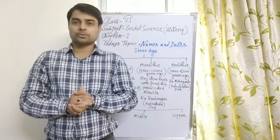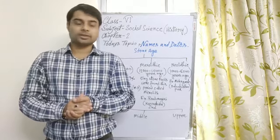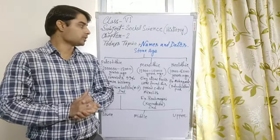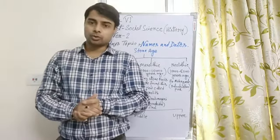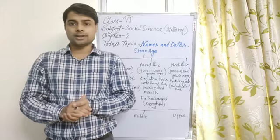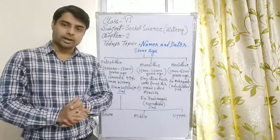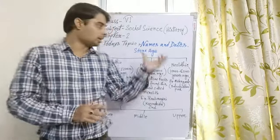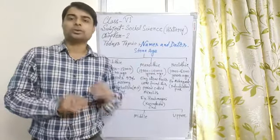Good morning students of class 6. Today I am discussing Social Science History, chapter 2: From Hunting Gathering to Growing Food. Today's subunit is Names and Dates. I have already discussed this topic in the previous class, but today I am discussing it again in detail.